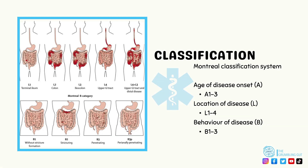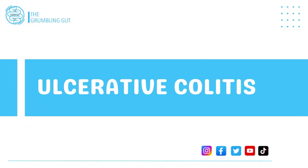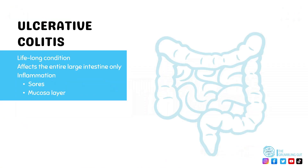Crohn's disease is currently classified based on the Montreal classification system, which categorizes Crohn's disease based on the age of disease onset, the location, and the behavior of the disease. For an in-depth explanation of the different categories and subcategories, see your information pack, which is available at the end of this lesson.